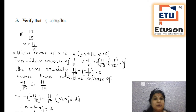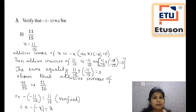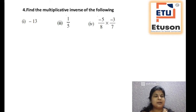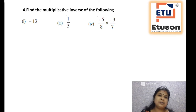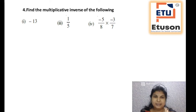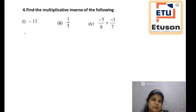You have to write down each and everything with proper steps. The other bit you are going to do on your own. Now let us go to the next question: find the multiplicative inverse of the following. Multiplicative inverse is nothing but the reciprocal. Reciprocal means if the number is x, the reciprocal is 1 by x.